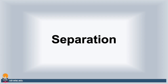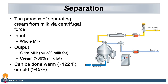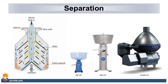Another very common aspect of dairy ingredient production is separation. The most common method of separation is centrifugation, where we use centrifugal force to separate the cream from the skim milk. As you can see on the diagram to the right of the screen, you input whole milk into the separation system and you get cream and skim milk. This can be done either warm at 122 degrees Fahrenheit or cold, which is less than 45 degrees Fahrenheit. There are many different sizes of separators, from a benchtop model at about 100 liters per hour up to a large-scale production separator which can do approximately 10,000 liters an hour.